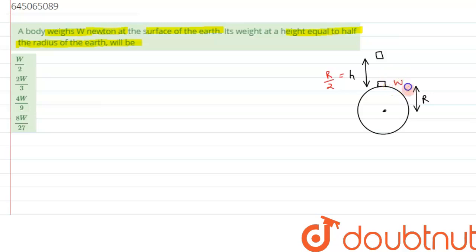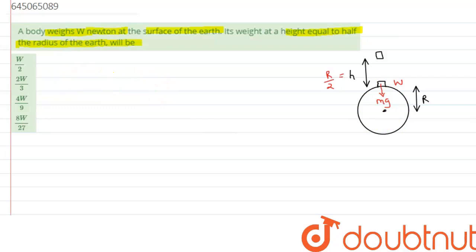At the surface, its weight is given as W, and we know weight is the force exerted by the body on the surface of the earth. If m is the mass of this body, we can write W = mg, the weight of the body acting downwards at the surface of the earth.